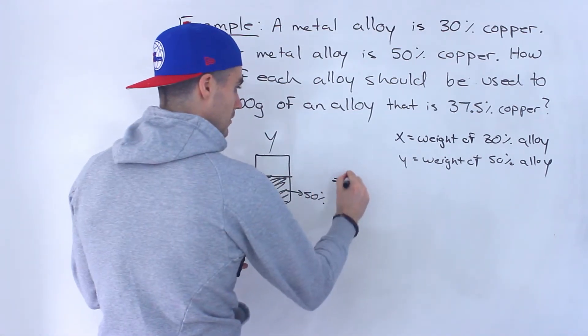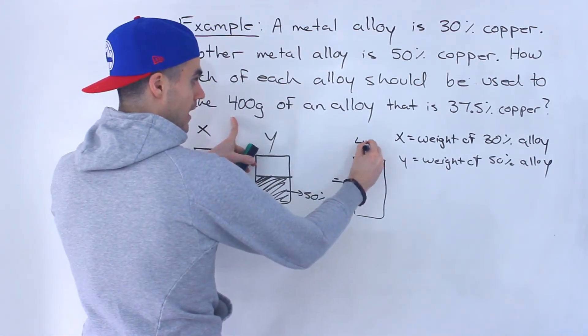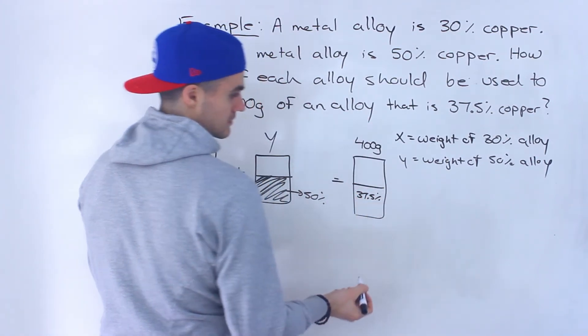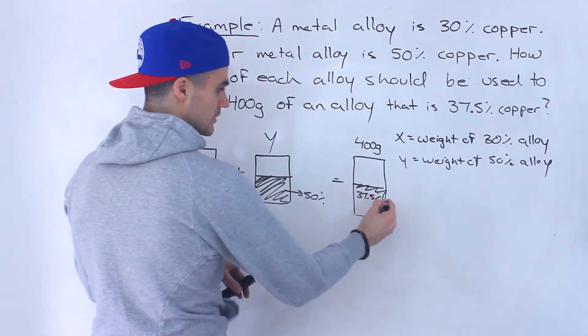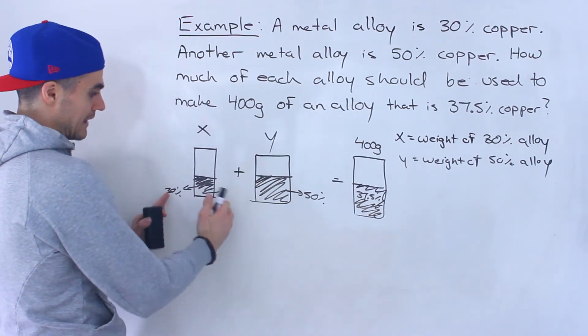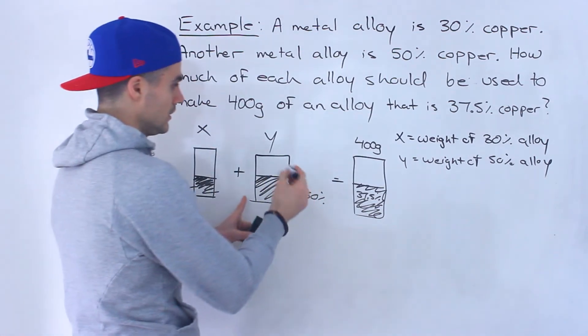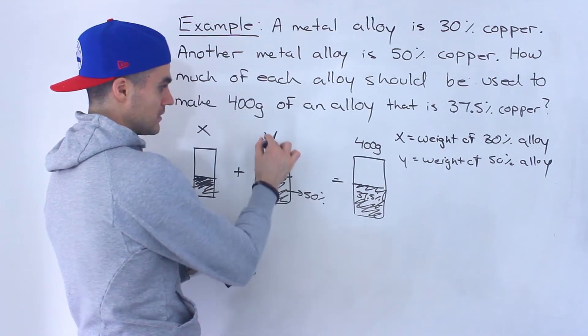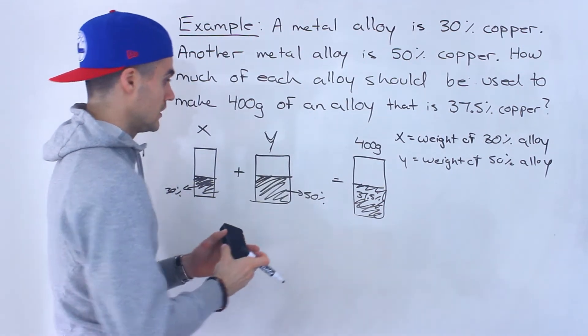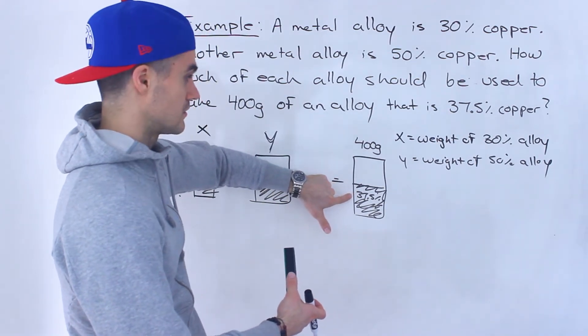And when we combine these together what we're gonna get is an alloy that's 400 grams and that has 37.5% copper. Right, so some kind of weight of this alloy which is 30% copper and then the other 70% some kind of other metal, and then we have this alloy the weight y which is 50% copper. The other 50% some kind of other metal. When we combine them what we're gonna get is 400 grams of an alloy that's 37.5% copper.